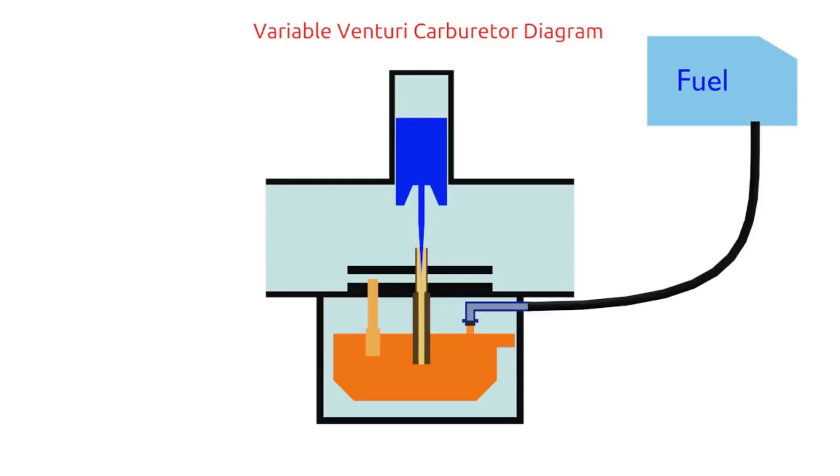The higher the piston position, the wider Venturi will be. The wider the Venturi, the greater the airflow. And the result, the faster engine RPM.